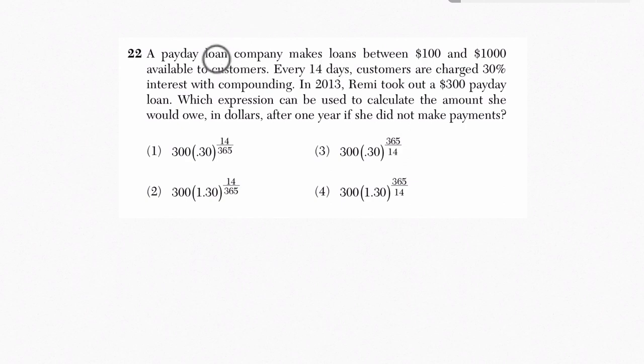Alright, so we're told that a payday loan company makes loans between $100 and $1,000 available to its customers. Every 14 days, customers are charged 30% interest with compounding. So that just means after 14 days, you get charged 30%, and then the next 14 days, if you don't pay it, you get charged 30% on top of that.